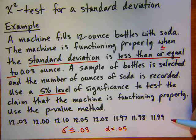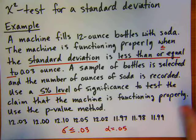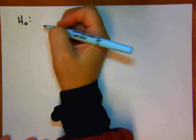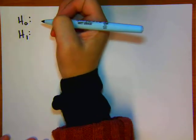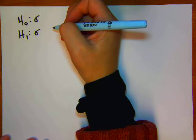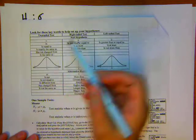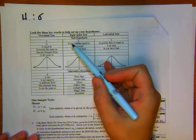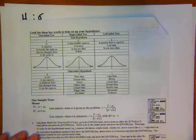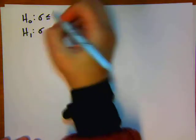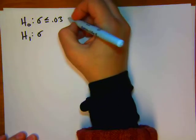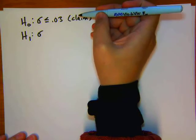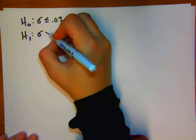We have raw data, so we'll need to plug it into our calculator and get descriptive statistics from the one-var stats function. For our hypotheses: the null hypothesis is sigma less than or equal to .03 — that's our claim, meaning the machine is functioning properly if we fail to reject it. The complement, the alternative hypothesis, is sigma greater than .03. The 'less than or equal to' goes in the null hypothesis, making this a right-tailed test.